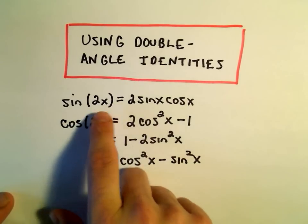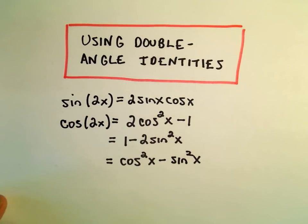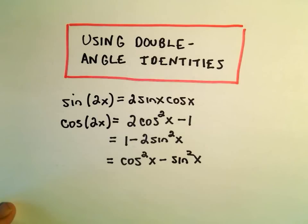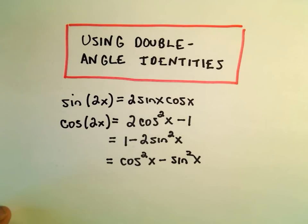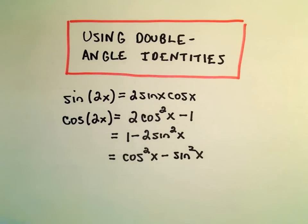For sine of 2x, there's just one. It says it's 2 sine x times cosine x. But for cosine of 2x, there's actually three. There's 2 cosine squared x minus 1, 1 minus 2 sine squared x, and then cosine squared x minus sine squared x.